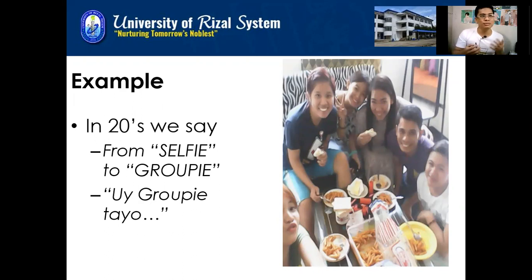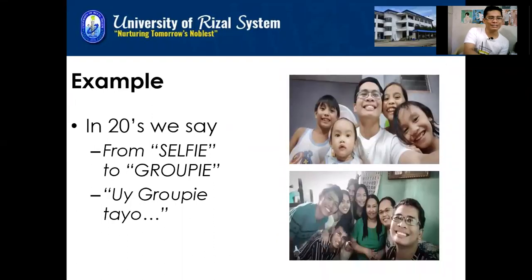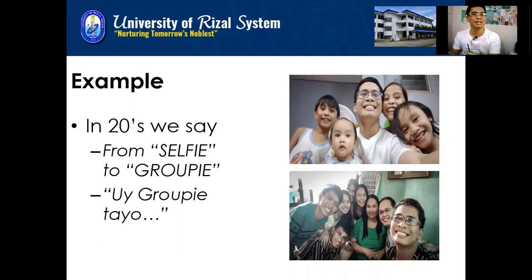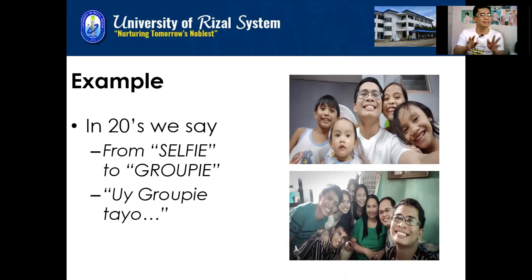When there are many of you, instead of using 'selfie,' the word 'groupie' is now used — meaning a group of people taking a photo together. This progression from 'kodak' to 'selfie' to 'groupie' is a manifestation of how language varies from time to time. As years go on, as society progresses or changes, culture changes at the same time, and when there are changes in our society and culture, it actually affects the language we use.